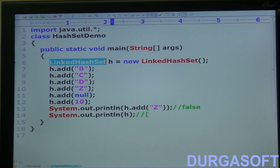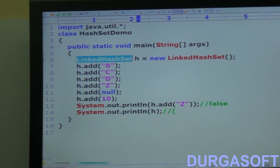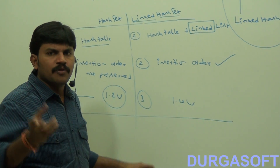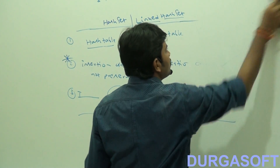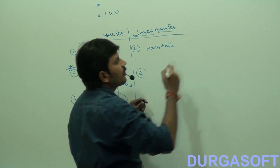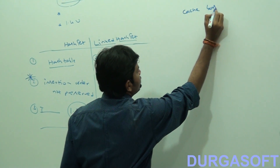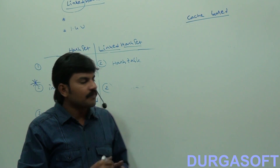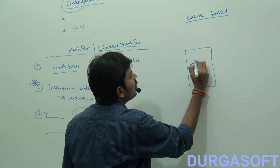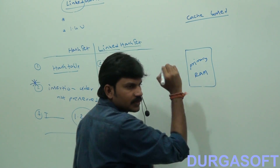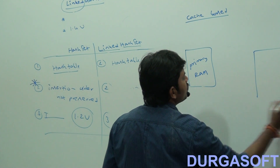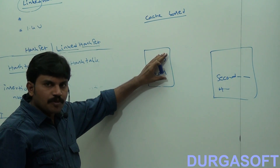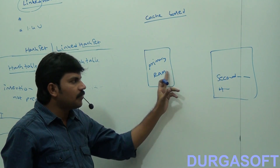Here there is one small important use case. Where can we use LinkedHashSet properly? One area is cache-based applications. In academics, we are aware of cache memory — primary memory is RAM, secondary memory is hard disk. The speed difference between RAM and hard disk is very large, so to balance performance we use cache memory in the middle.